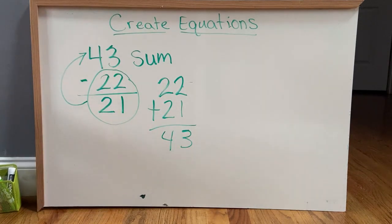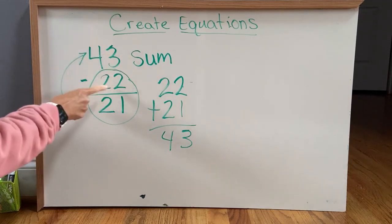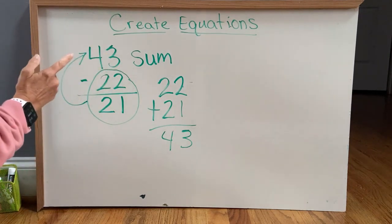So in order to make 43 our sum, we had to subtract a number. Let's do another one.